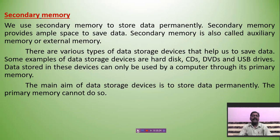There are various types of data storage devices that help us to save data. In today's market, there are many storage devices available. Some examples of data storage devices are: hard disk — which is the main storage device of a computer — CDs, DVDs, and USB drives, also known as pen drives. Data stored in these devices can only be used by the computer through its primary memory.